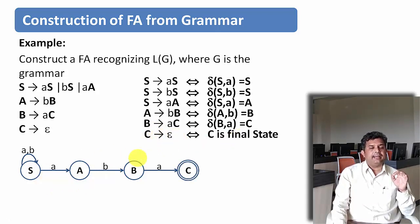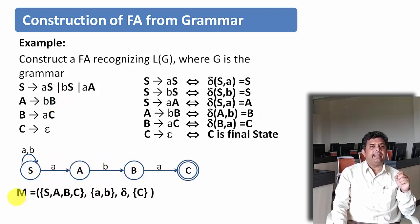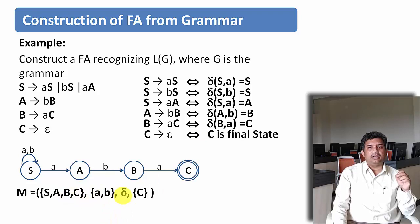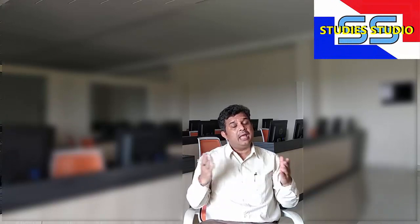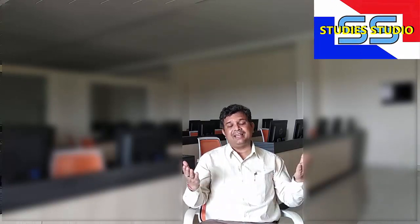C derives Epsilon, so C has to be the final state. This is how we draw our finite automata from a given grammar. The finite automata will have states S, A, B and C. Input symbols are A and B. Delta is already defined, and C is the final state. I hope you understood how to convert a finite automata from a given grammar. In our next video, we are going to see what is left linear grammar and right linear grammar, and how to convert left linear grammar to right linear grammar and vice versa. See you then, take care.